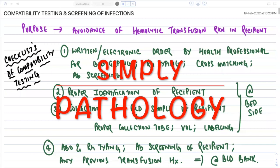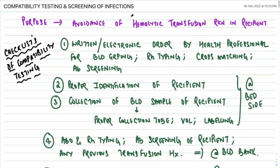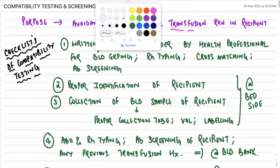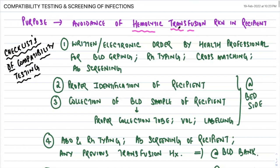Good morning everyone. Today we are going to continue with blood banking and understand what compatibility testing is and what infections we are screening for. The basic purpose of compatibility testing is to avoid any kind of hemolytic transfusion reaction in the recipient.